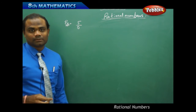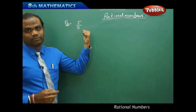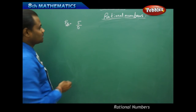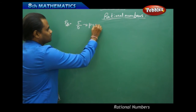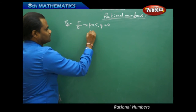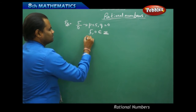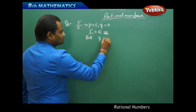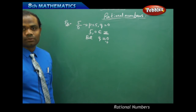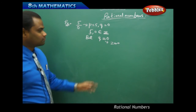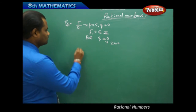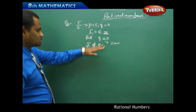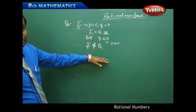Is φ/0 a rational number? This is an important special case. Here P is φ and Q is 0, where φ and 0 belong to Z, so the first condition is satisfied. However, the second condition requires Q should not be equal to 0, but here Q is 0. Therefore φ/0 cannot be a rational number. This is one of the important examples in understanding the set of rational numbers.